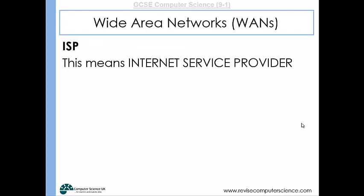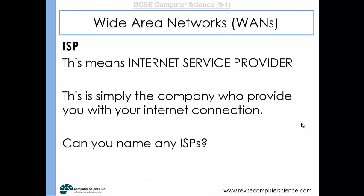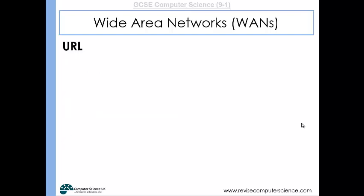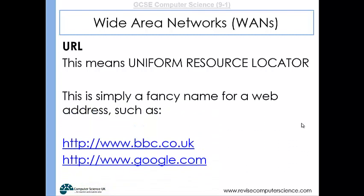ISP stands for internet service provider — this is the company that provides you with your internet connection. You might have your connection provided by BT, Sky, or Virgin; these are all examples of ISPs. A URL is just a fancy name for a web address. It stands for Uniform Resource Locator, and you will have seen URLs all the time when you've been online — for example, bbc.co.uk or www.google.com.